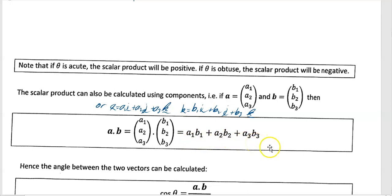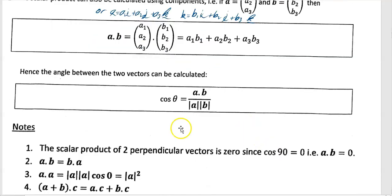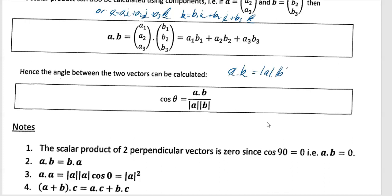This is very, very important for us to understand. Hence the angle between the two vectors can be calculated. Remember your formula: A·B equals modulus of A times modulus of B times cos of theta. So if you want to find cos theta, you rearrange to get cos theta equals A·B divided by (|A| times |B|). That's where this formula comes from.